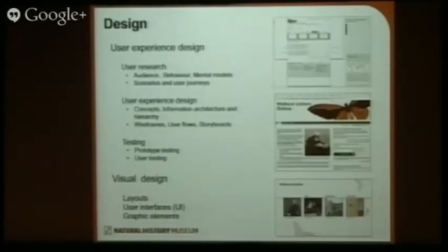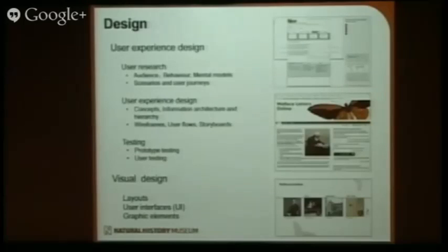On the top right we have an example of a wireframe for the collections level description project, showing where collections information would sit on the website, where you would link out to other things, and how you'd return to the search. That prototype would then be shown to actual users to make sure it makes sense to them — effectively testing the design.